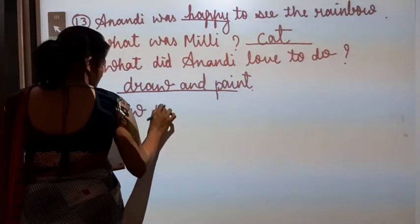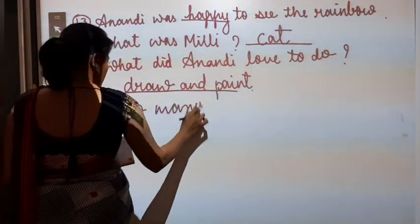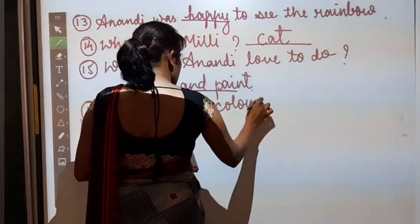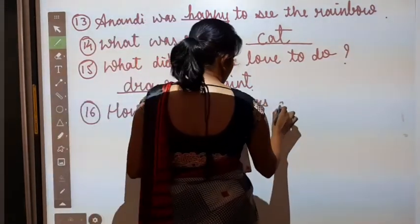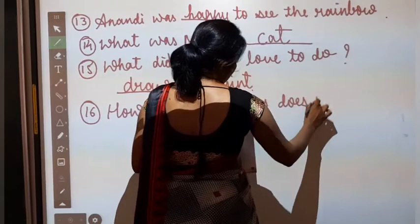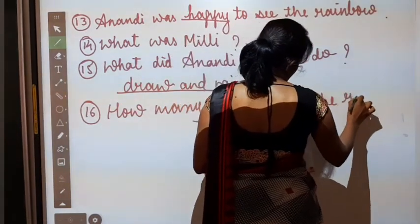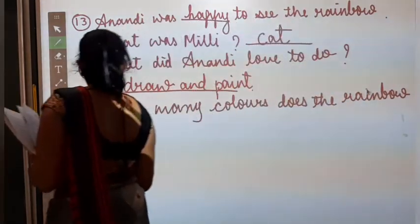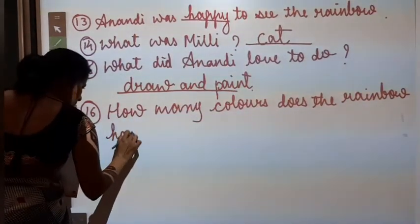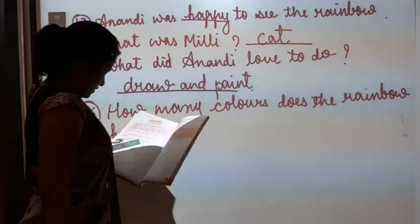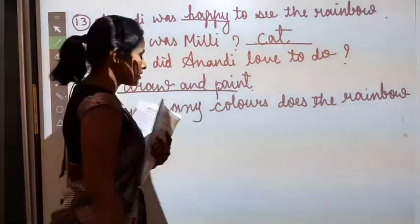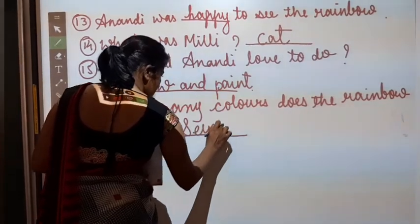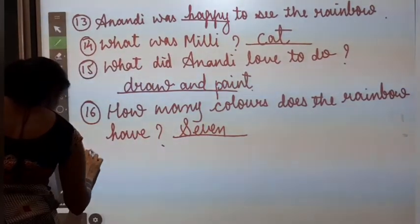How many colors does the rainbow have? Rainbow ki kitne colors hoti hai? Four, five, six, seven. So what will be the answer? Seven colors are there in the rainbow. Number seventeen.